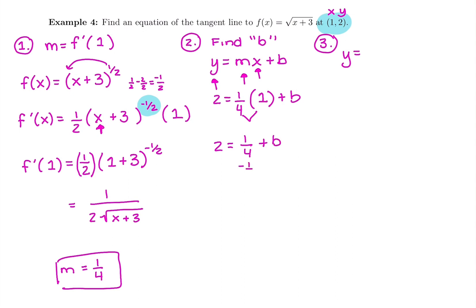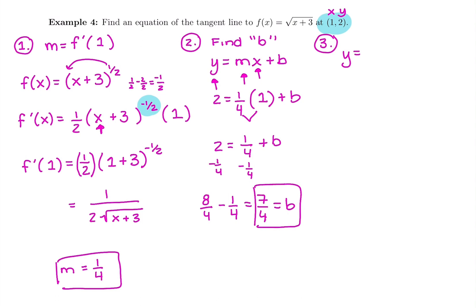So you get 2 equals one-fourth times 1, which is just one-fourth, plus b. I want to get b by itself, so I'm going to subtract one-fourth from both sides. 2 minus one-fourth — if it's a graphing calculator, hit math, enter, enter and it'll go back to a fraction. Or F arrow D on a scientific calculator. 2 is really the same thing as 8 over 4, so 8 over 4 minus one-fourth gives me seven-fourths as my b. So my final answer is y equals one-fourth x plus seven-fourths.